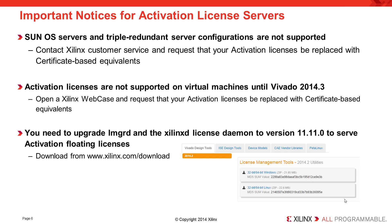Activation licenses are not supported on virtual machines until Vivado 2014.3. If you're viewing this before 2014.3, open a Xilinx webcase and request that your activation license be switched over. If you're watching after 2014.3 is released, virtual machines are supported. You need to upgrade LMGRD and the Xilinx license daemon to version 11.11.0 in order to serve floating licenses — the previous version 11.6 does not support activation.